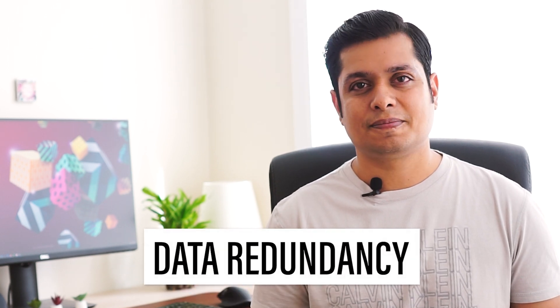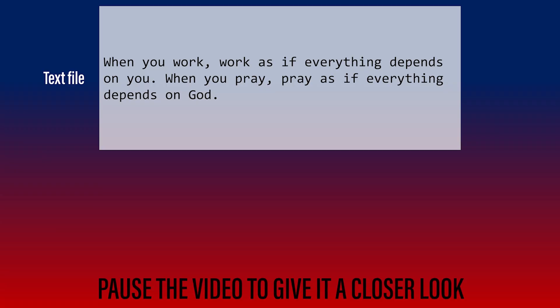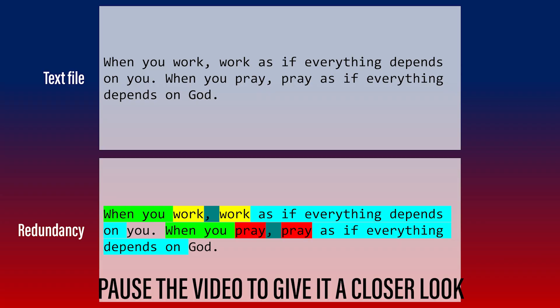That concept is called data redundancy. It means that in most computer files, the same data is being repeated over and over again. Here is a text file containing a proverb. Notice the highlighted repeating words and phrases. This is called data redundancy. Data compression software gets rid of this redundancy.